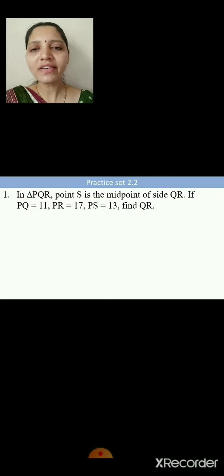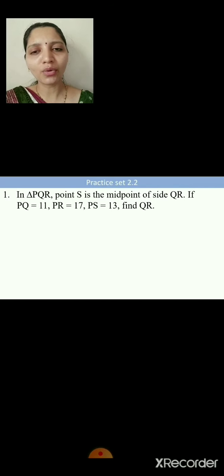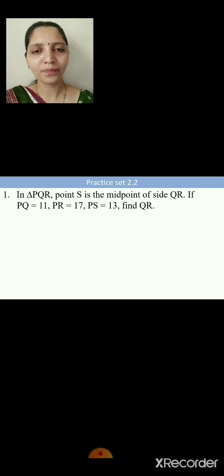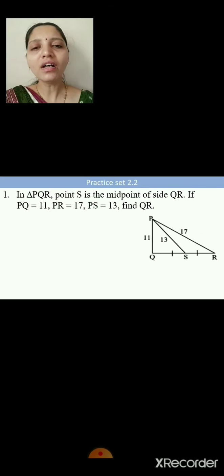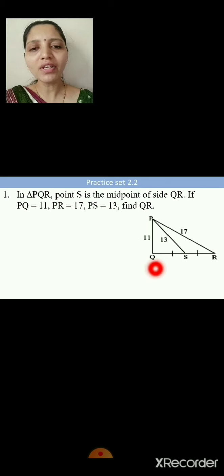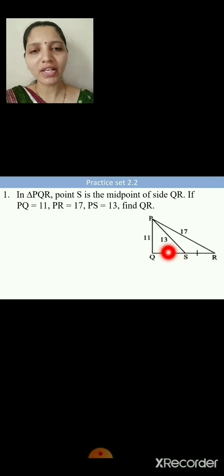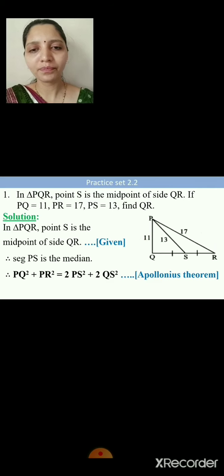Problem 1: In triangle PQR, point S is the midpoint of side QR. If PQ = 11, PR = 17, and PS = 13, find QR. Draw the figure: PQ = 11, PR = 17, PS = 13, and QR is to be found.